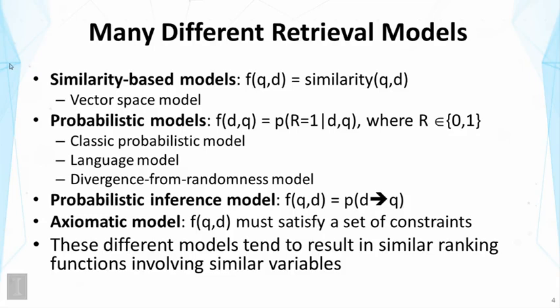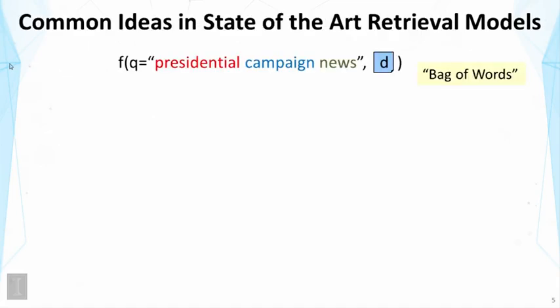So now let's take a look at the common form of a state-of-the-art retrieval model and to examine some of the common ideas used in all these models. First, these models are all based on the assumption of using the bag of words to represent the text, and we explained this in the natural language processing lecture. Bag of words representation remains the main representation used in all the search engines.